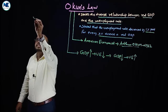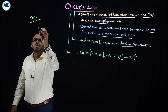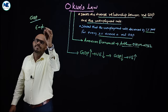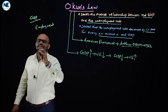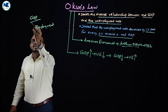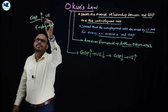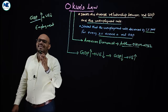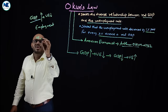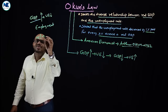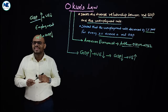GDP — Gross Domestic Product of the country — and employment or jobs share a positive relationship. When GDP goes up, unemployment goes down. Or when unemployment goes down, real GDP goes up and the economy grows.